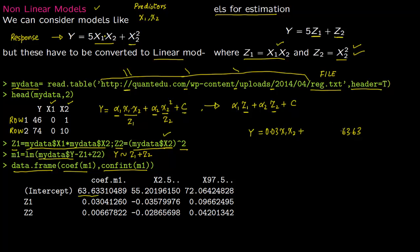Then alpha 1 is 0.03, so 0.03*X1*X2 plus, and this is 0.006. So this is your nonlinear model.